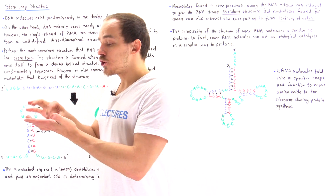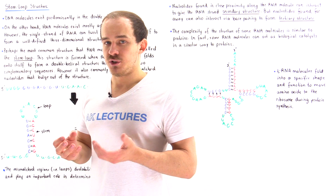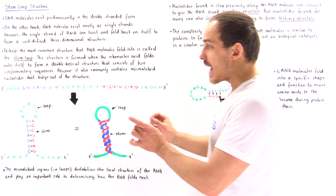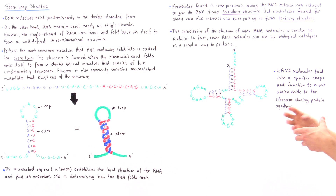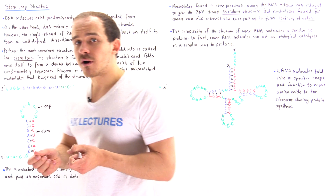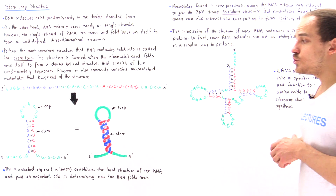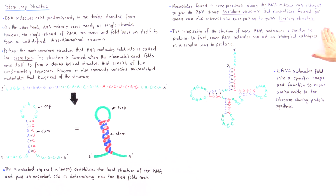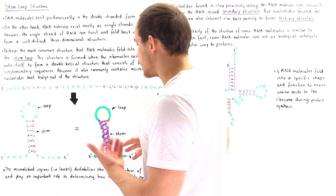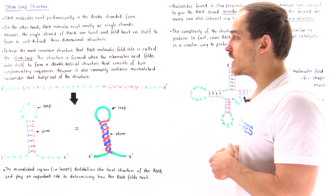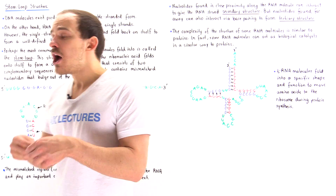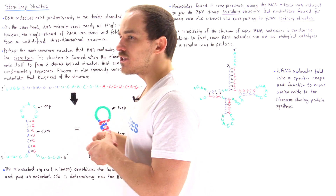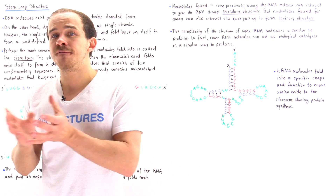Just like in proteins, which have tertiary and secondary structure, RNA molecules can also form secondary and tertiary structures. When nucleotides found in close proximity along the polynucleotide chain interact via hydrogen bonds between the nucleotide bases, that forms secondary structure. When nucleotides found far away interact via these base pairings, that can form tertiary structure. This complexity — this ability of the RNA molecule to form complex structure — gives it the ability to function in many different ways.